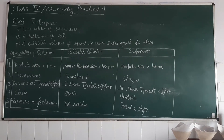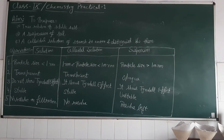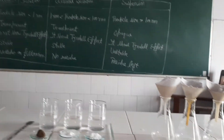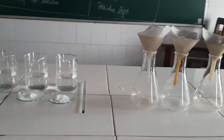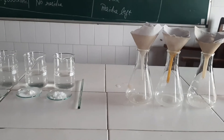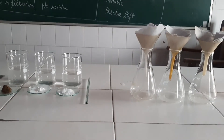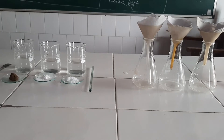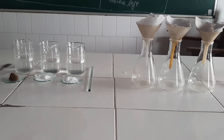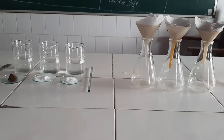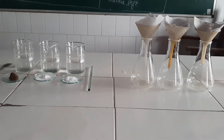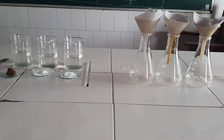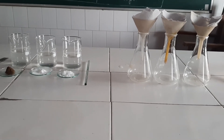As we all know, in a true solution the particle size is less than 1 nanometer. In case of colloidal solution, the particle size is greater than 1 nanometer but less than 100 nanometers. In case of suspension, the size of the particle is greater than 100 nanometers. All the properties are different only because of the size of the particle, because all properties depend on that only.